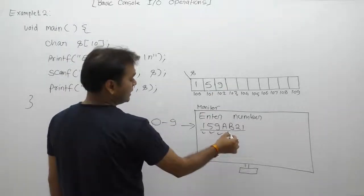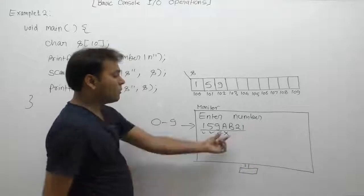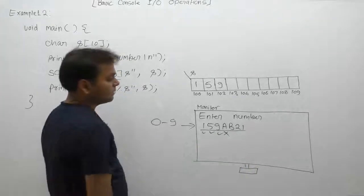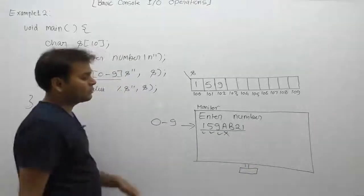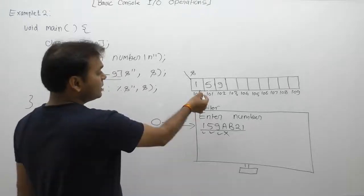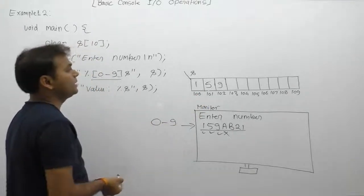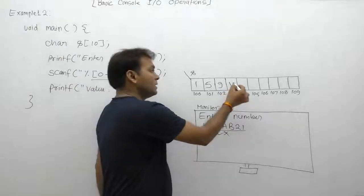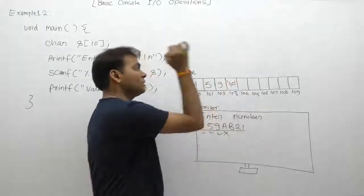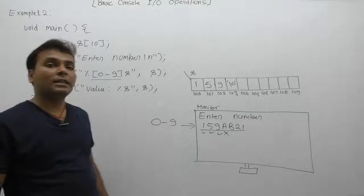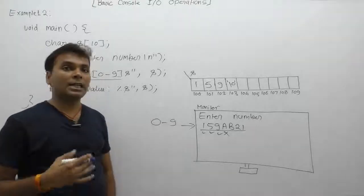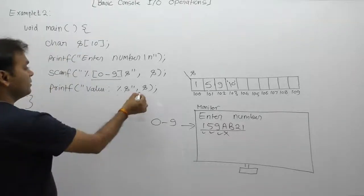Next one, 'a' - 'a' is not part of the given range, therefore it will stop its working. In this case, only 159 is stored. Then, what is the value displayed?